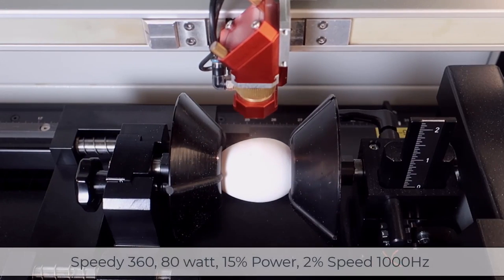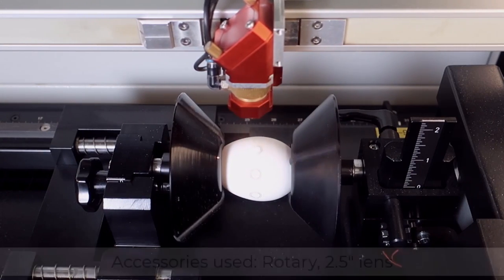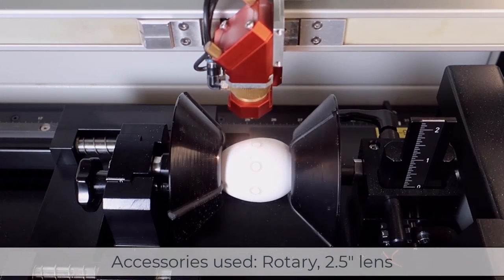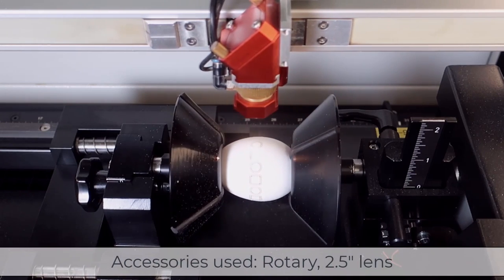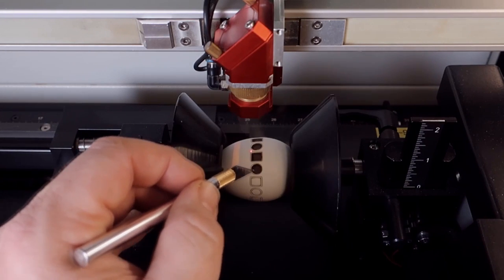Finally, it's important that we know whether these eggshells can be as cleanly cut as they can be engraved. For this test, we've chosen a speedy 360-80 watt running at 15% power and 2% speed. Here again we're using our rotary attachment and a 2.5 inch lens, cutting a very basic circle and square pattern around the circumference of our egg.